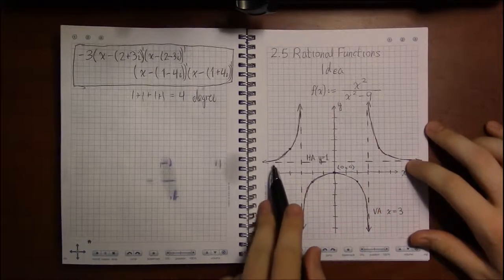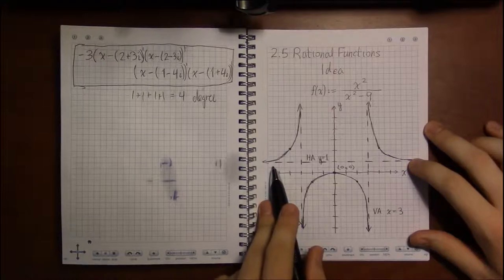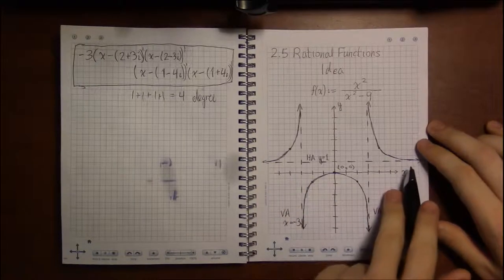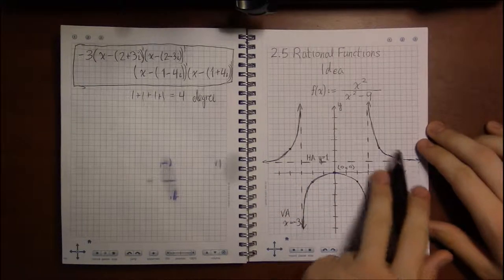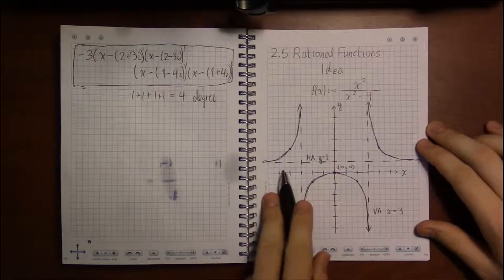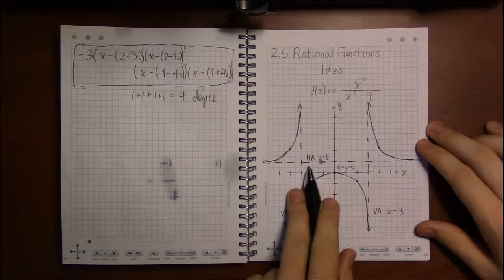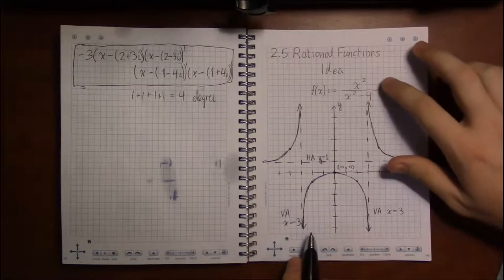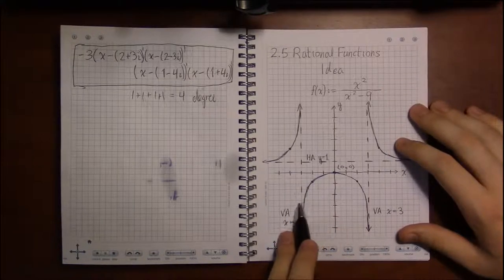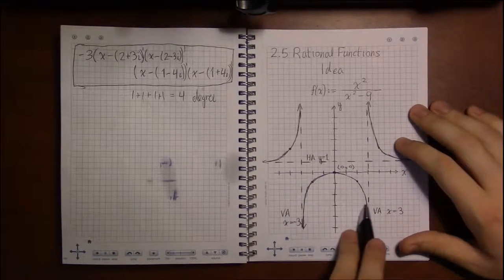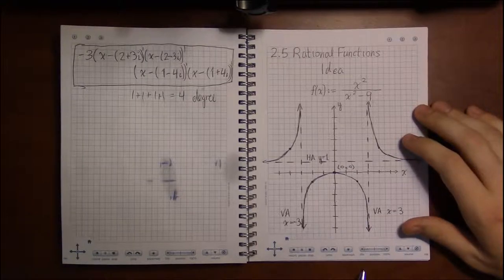Many times it will never touch the asymptotes. A rational function can cross or touch its horizontal asymptote, but a rational function will never touch one of its vertical asymptotes.